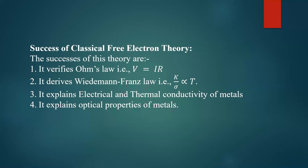The first success is that it verifies Ohm's law. This theory successfully verifies and proves Ohm's law, that is V equal to I into R. Otherwise, Ohm's law is given by J equal to sigma into E, where sigma is the electrical conductivity and E is the electric field applied. That is successfully proved by this theory.